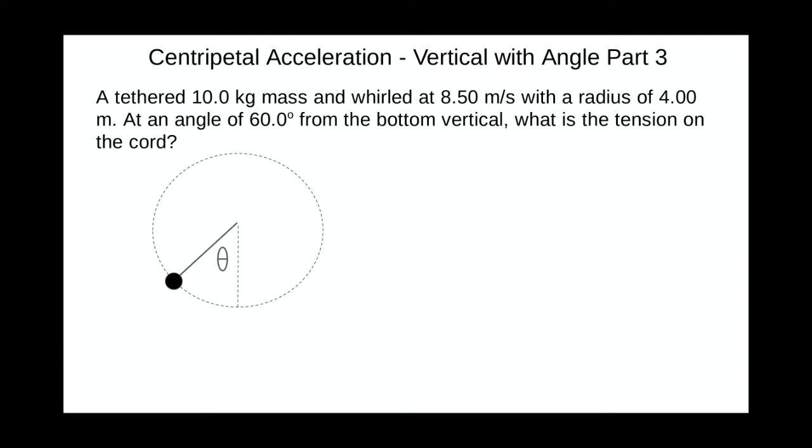So in this case, we're looking at a tethered 10 kilogram mass, whirled at 8.5 meters per second with a radius of 4 meters. And we're looking at the angle 60 degrees below in the circle, at the bottom of the vertical. What's the tension in the chord?